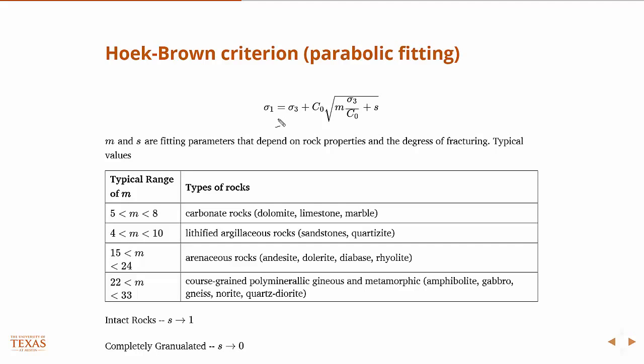And this C0 is, as we defined previously, the unconfined compressive strength. And then M and S are essentially fitting parameters, or material properties you might call them, that depend on the rock properties. So M is specifically related to the rock properties. And here's some typical values. I'm not sure why these didn't show up. Should be like this. So there's some typical values for M for different types of rocks.